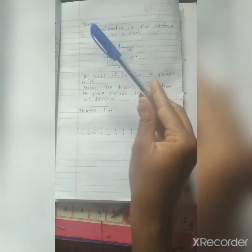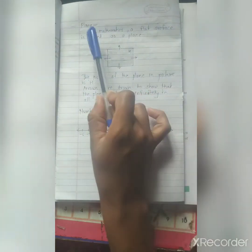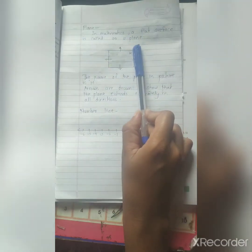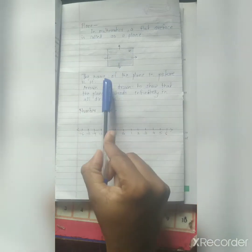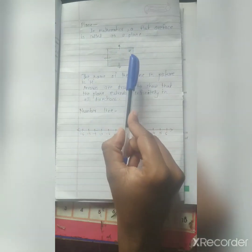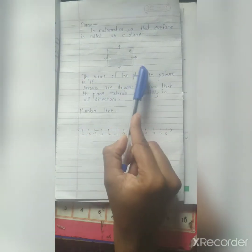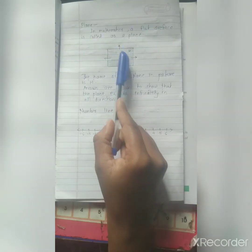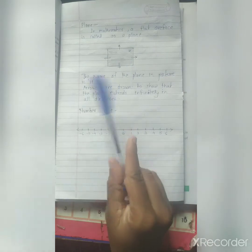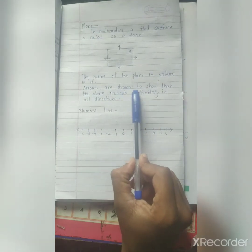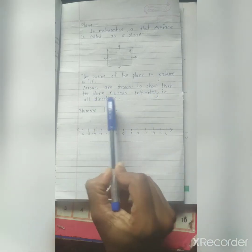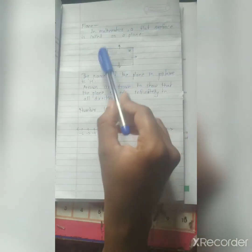Third point is plane. In mathematics, a flat surface is called as a plane. Any flat surface is nothing but the plane. For example, this paper of my notebook is also one type of plane. In this figure, the name of this plane is H. Arrows are given or arrows are drawn to show that the plane extends infinitely in all directions.